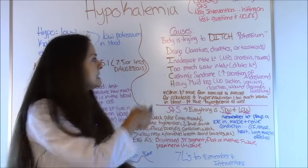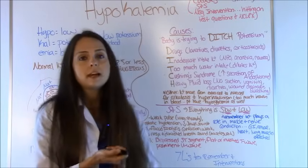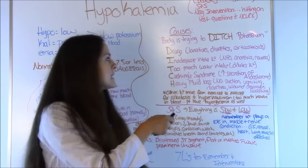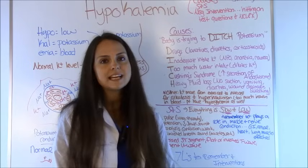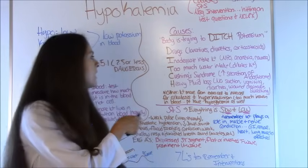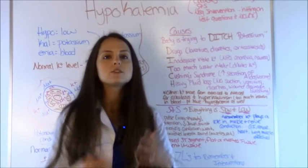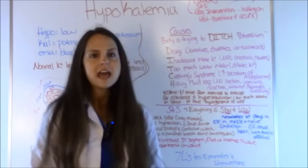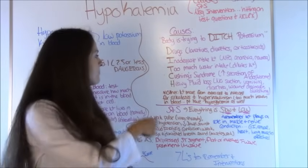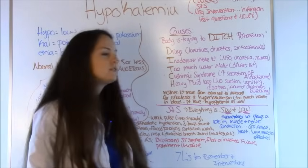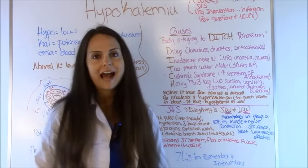I is for inadequate intake of potassium. This could be caused by a lot of reasons — they're NPO and they've been NPO for a long time, so they're not taking in potassium. They have anorexia, or maybe they're just really sick and nauseous and not able to eat anything, so their potassium level goes down. T is for too much water intake — whenever you consume too much water with water intoxication, you can dilute the potassium in the blood. C is for Cushing syndrome, where you have too much secretion of aldosterone, which throws off your potassium level.